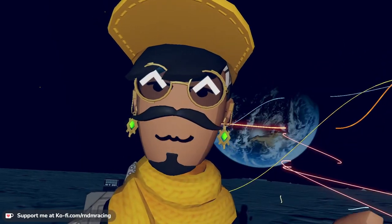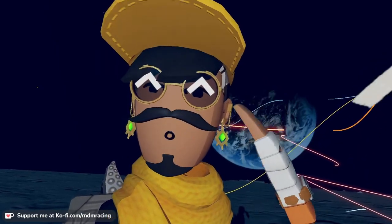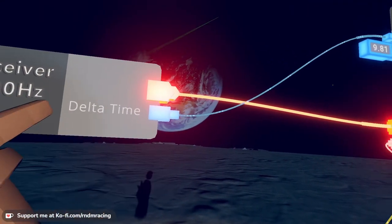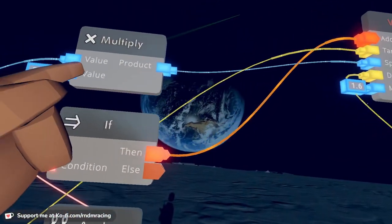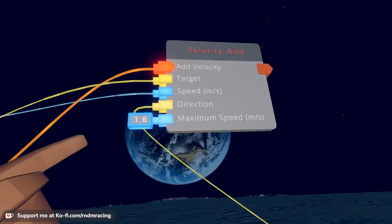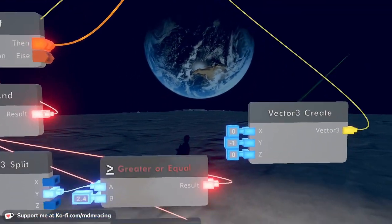The Delta Time is going to help fix that, right? So we're going to multiply, we're going to grab this Delta Time from the 30 Hertz receiver, we're going to multiply it by the gravity of the moon. And then from here, wait, we need one more thing right here, another Vector.